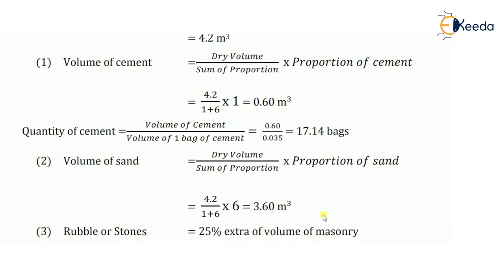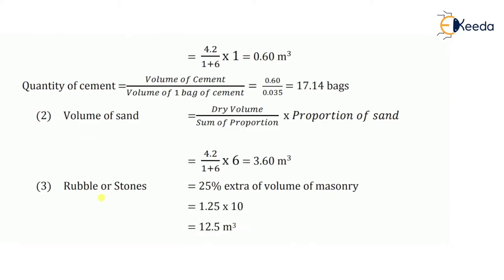Now let's calculate rubble or stones required for the uncoursed rubble masonry. The volume of rubble or stones is generally taken as 25% extra of the volume of masonry. Here the volume of masonry is 10 meter cube, so 25% extra of that will be 1.25 into 10, which comes as 12.5 meter cube.